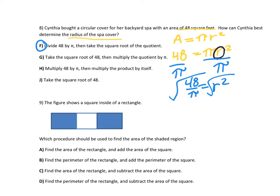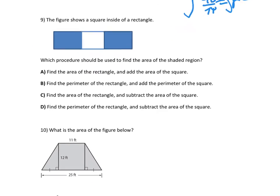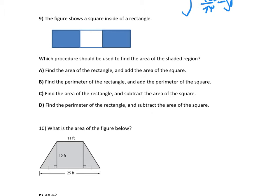Number 9. The figure below shows a square inside a rectangle. Which procedure should be used to find the area of the shaded region? What you would do first is you would find the area of the big region. So you'd find the area of the rectangle, and then subtract the area of the square.